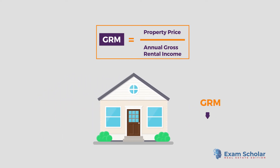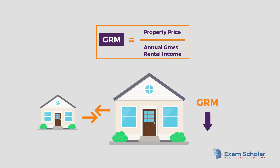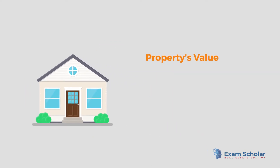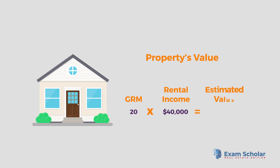When a property has a lower GRM compared to nearby competition, it typically means that investment is more profitable. To estimate a property's value, the GRM can also be used. Using the previous example, if we already know that the average GRM of the area is 20 and the rental income is $40,000, we can multiply $40,000 by 20 to come to an estimated value of $800,000.